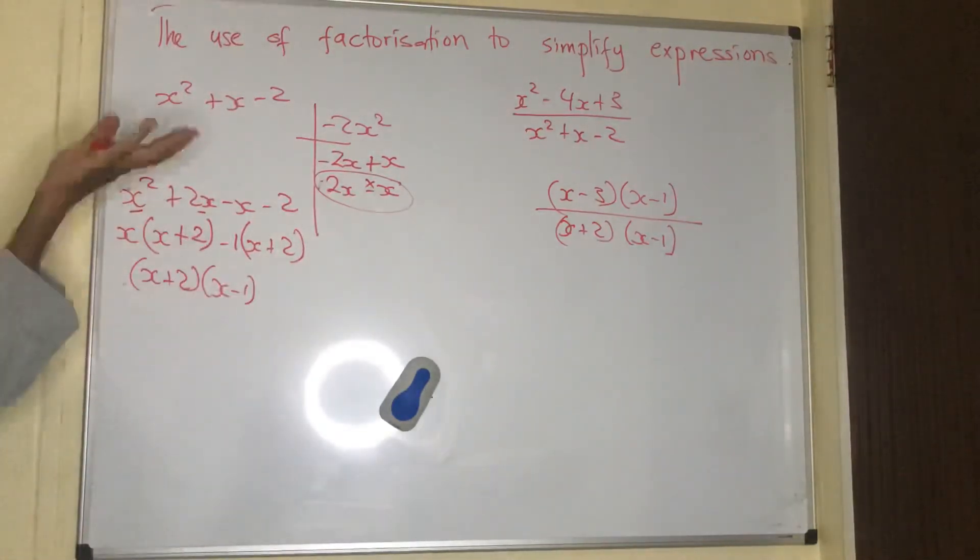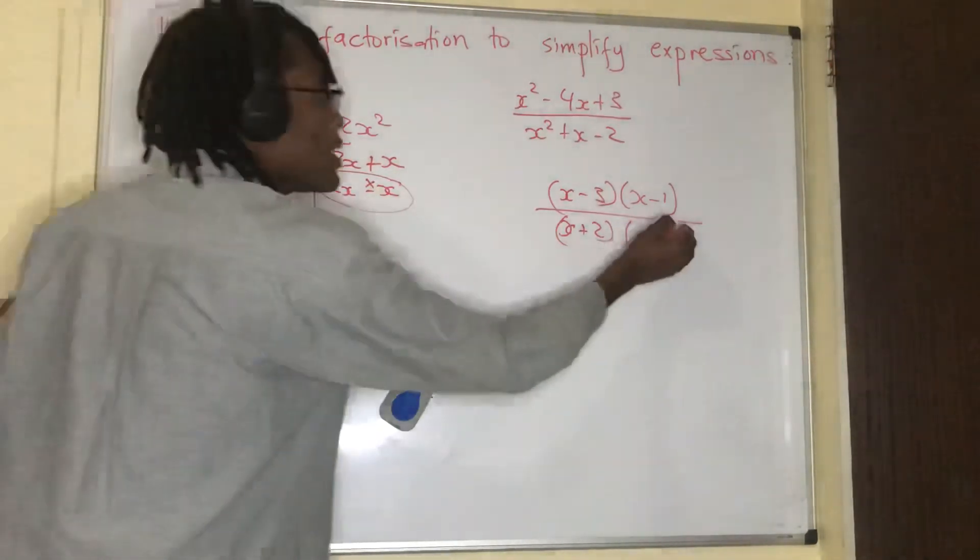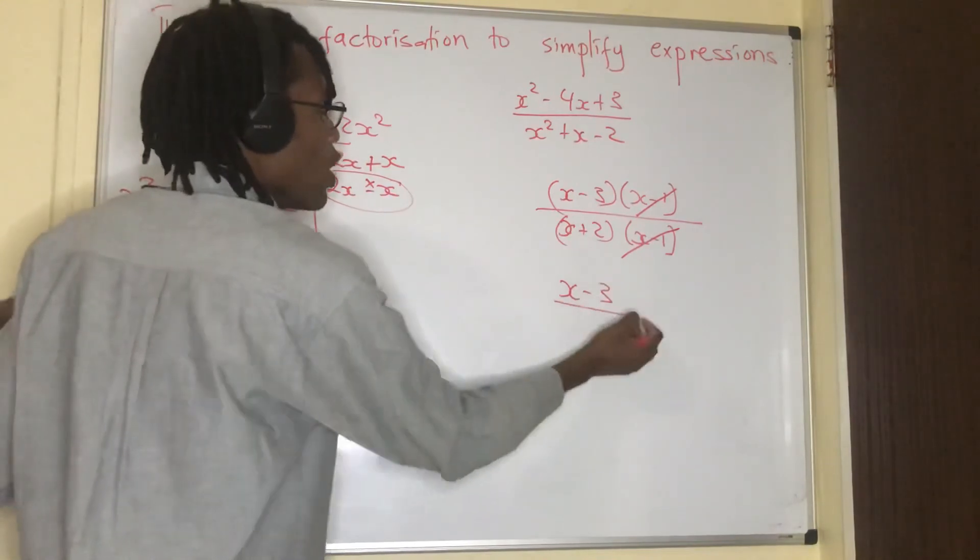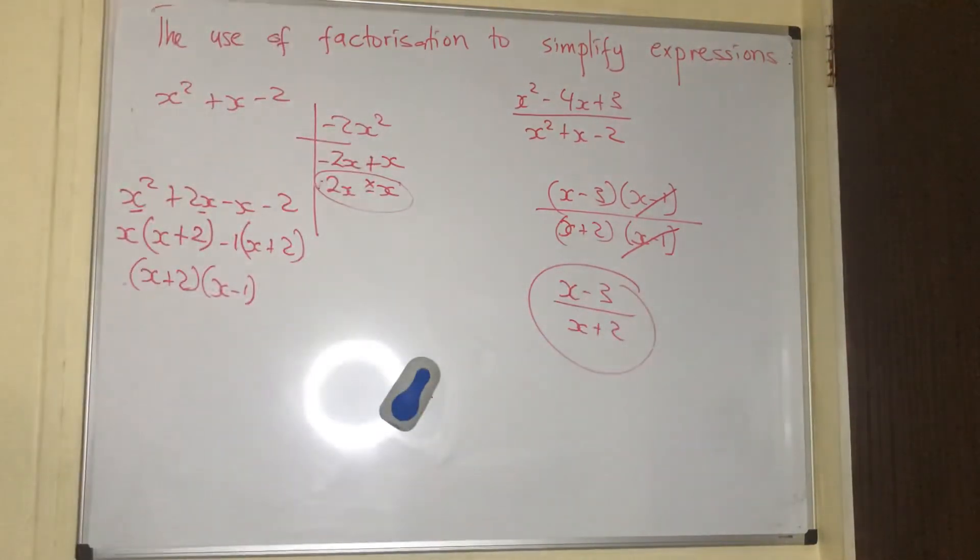We have factorized our fraction there, but it's not yet done. x minus 1 and x minus 1 cancel. I'm going to be left with x minus 3 over x plus 2. That is my final expression there.